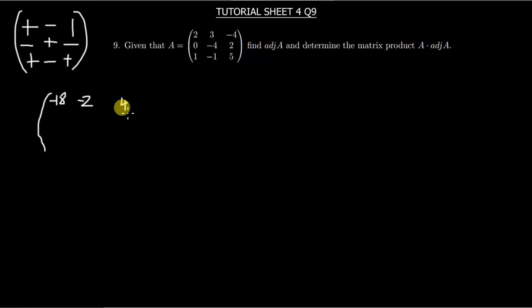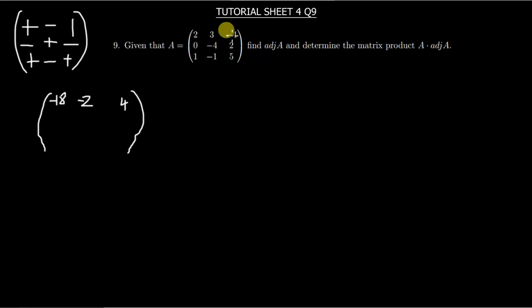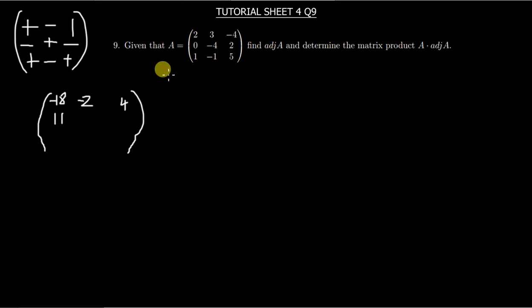We now proceed to finding the minors of the second row. To find the minor for the entry 0, you close that row and column — the remaining numbers give 3 times 5 which is 15, minus negative 1 times negative 4 which is 4, so 15 minus 4 gives 11. For the next entry: 2 times 5 is 10, minus negative 4 gives 10 plus 4, which is 14.